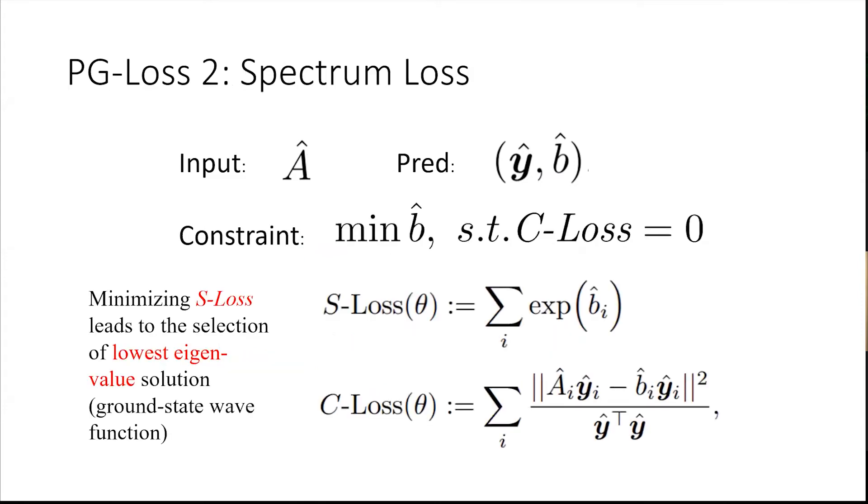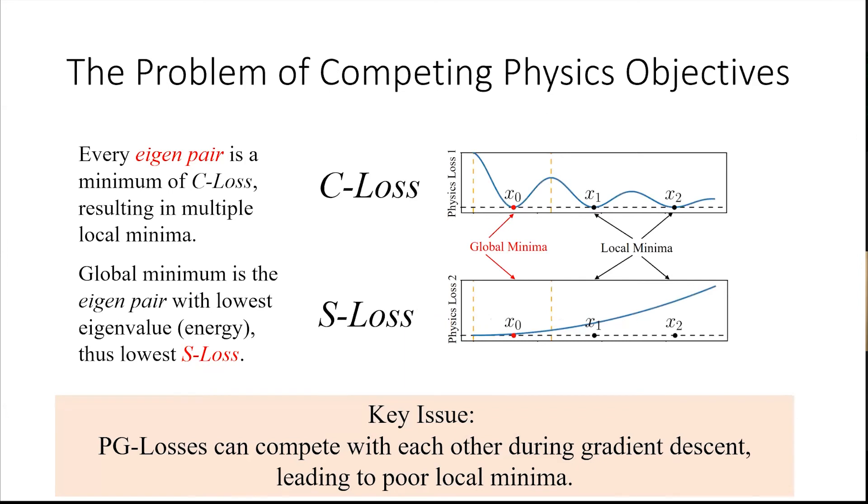We have the second physics loss. This loss is trying to get the lowest energy and try to enforce the constraint to find out its ground state energy. This loss is designed as the exponential form of the eigenvalue that by minimizing S loss, spectrum loss, we're going to get the smallest eigenvalue.